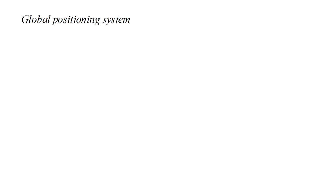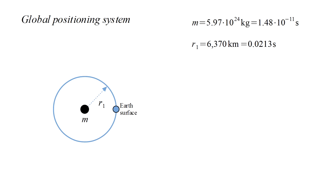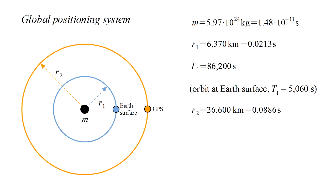We now have the tools we need to calculate relativity's predictions for the global positioning system. Our black hole will have the Earth's mass, about 1.5 times 10 to the minus 11th seconds. Earth's equator is represented by a coordinate ring with radius r1 equal to Earth's radius of .0213 seconds. Earth rotates, so our clock on this ring goes around once every 86,200 seconds. For comparison, the orbital period at Earth's surface is 5060 seconds. Our GPS clock will be in an equatorial orbit at r2 equals 0.0866 seconds. The resulting orbital period is half Earth's rotation period.